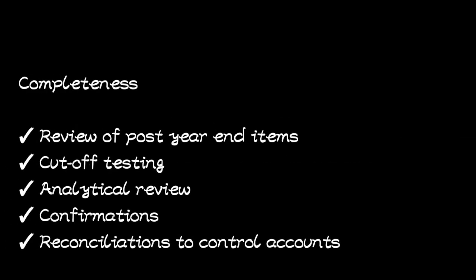In this video we are going to look at assertions and then the substantive procedures that can be performed. We are going to start with completeness. The objective of completeness is to ensure that all transactions that are supposed to be recorded are recorded. Completeness applies to both classes of transactions and account balances — things that appear in profit or loss and those that appear in the statement of financial position.